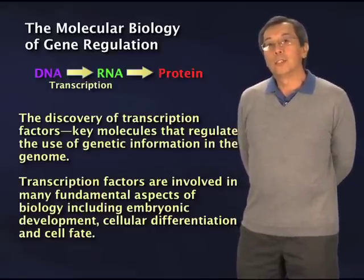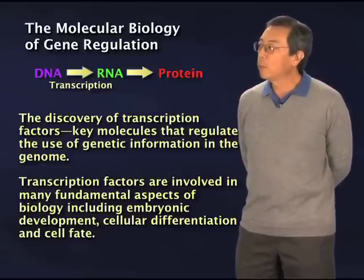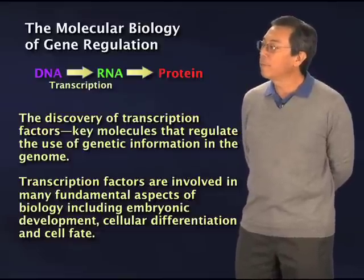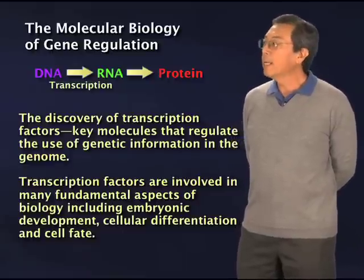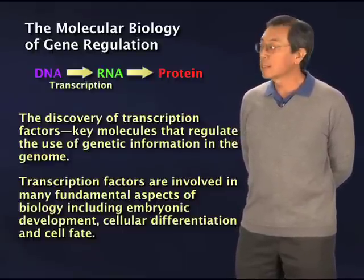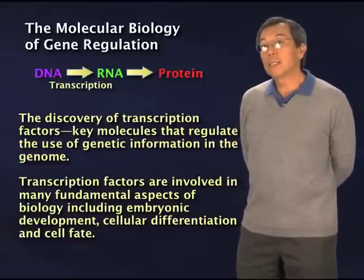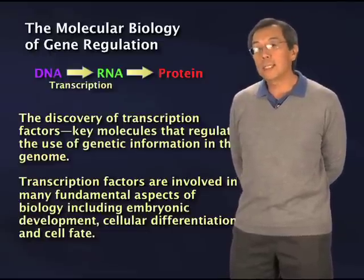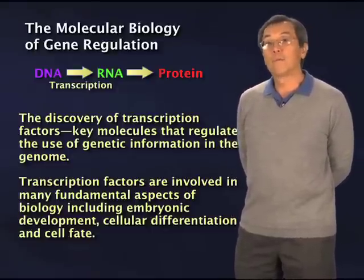First, to understand what gene expression means, you have to have a sense of what we tend to refer to in the field as the central dogma of molecular biology. Another way to think about this is the flow of biological information from DNA — in other words, our chromosomes, which every cell has its complement — to be transcribed into a sister molecule called RNA. This process of converting DNA into RNA is called transcription, and that is the topic of this lecture.